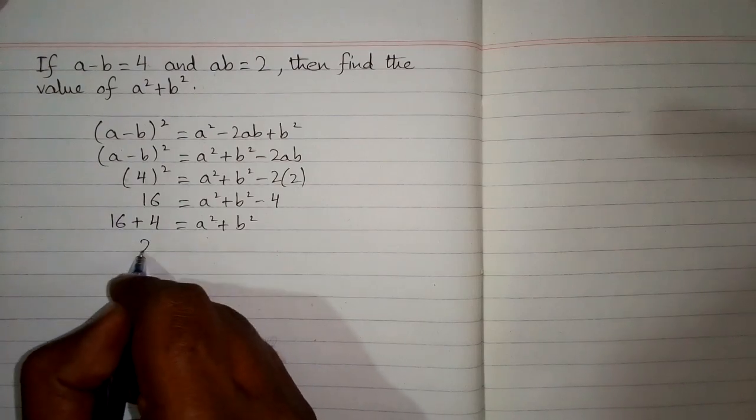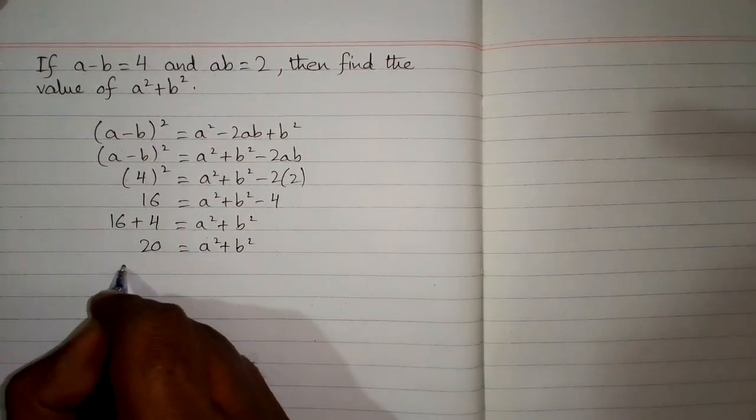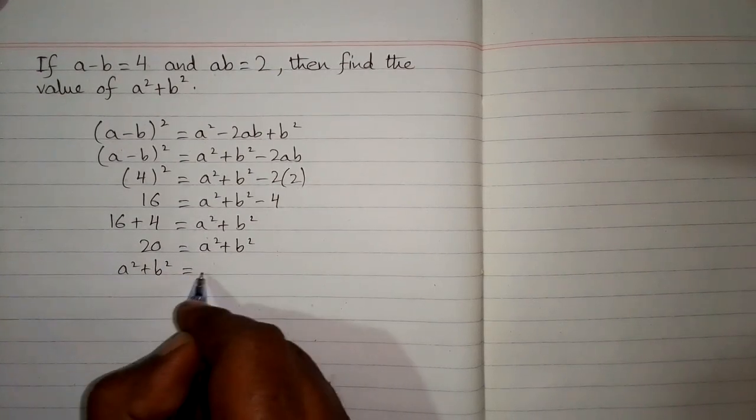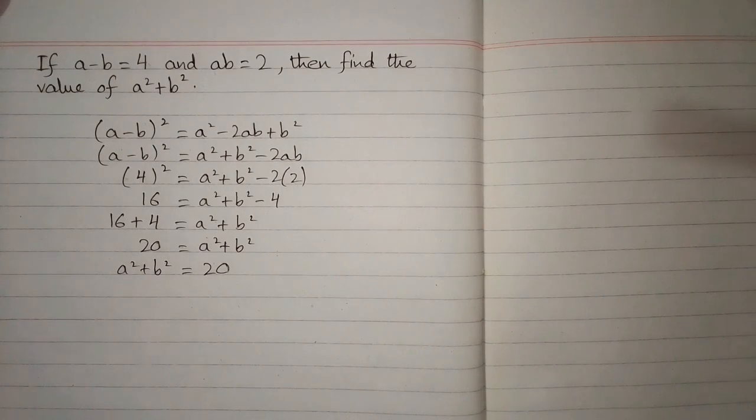Now 16 plus 4 is 20, so the value of a square plus b square is equal to 20. And this is the required answer.